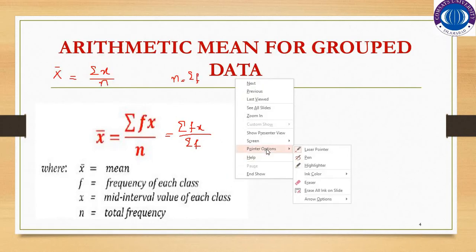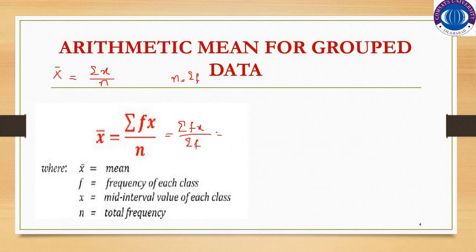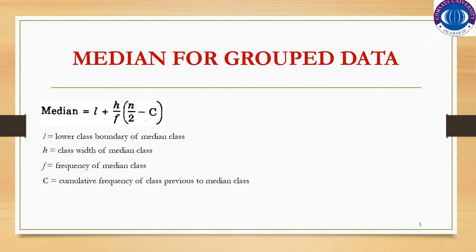Substituting into the formula: x̄ = Σ(f·x) / Σf = 7350 / 60 = 122.5. So this is the way to calculate the arithmetic mean for grouped data, which is 122.5.